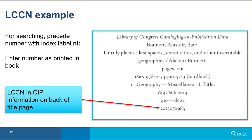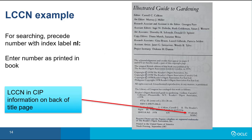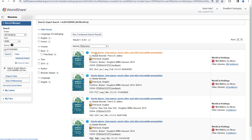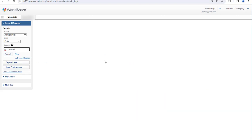For searching, precede the LCCN with the index label NL colon — you could think of this as National Library. In general, enter the LCCN as printed on the item. This example is before the year 2000, so it has a two-digit year separated by a hyphen. Again, for searching, precede the LCCN with the index label NL colon and enter the LCCN as printed on the item. Because I've used the index label NL colon, it doesn't matter what index I've selected in the drop-down menu above. If I click the title on one of these records to look at the full record, you can see that the number I entered is in the LCCN field.